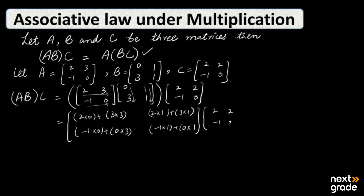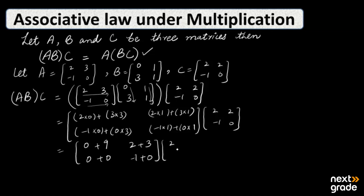We also need to include the C matrix. So simplifying: 0 plus 9, 0 plus 0. Similarly, 2 plus 3, minus 1 plus 0. Now write the C matrix: 2, minus 1, 2, 0. Now we will simplify these matrices.